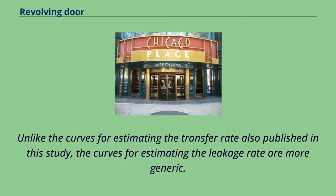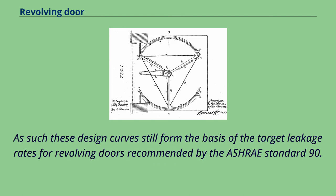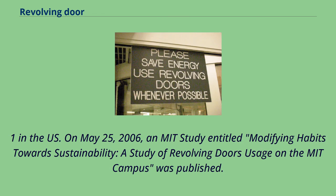The second study produced design charts for estimating the leakage rate through a revolving door. Unlike the curves for estimating the transfer rate also published in that study, the curves for estimating the leakage rate are more generic. As such, these design curves still form the basis of the target leakage rates for revolving doors recommended by the ASHRAE Standard 90.1 in the U.S.